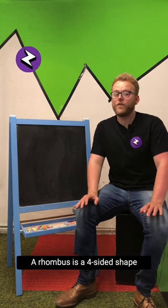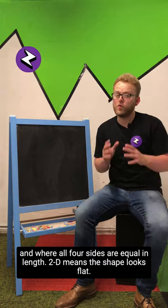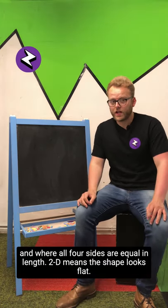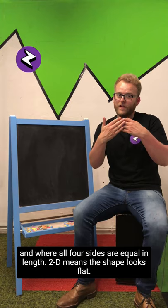So a rhombus is a four-sided shape where all four sides are equal in length. 2-D means the shape looks flat, so you can only see it face on.